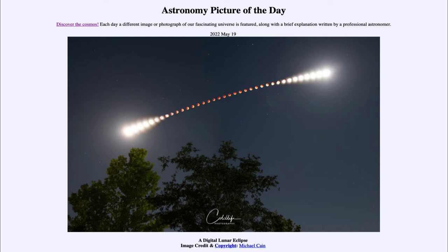The moon is normally directly illuminated by the sun, reflecting sunlight directly from the moon to Earth. However, when it passes into Earth's shadow, the sunlight can no longer reach it directly and only reaches it through the Earth's atmosphere. As light passes through the atmosphere, it will be scattered — the very short wavelengths are scattered the most and the long wavelengths are scattered the least.